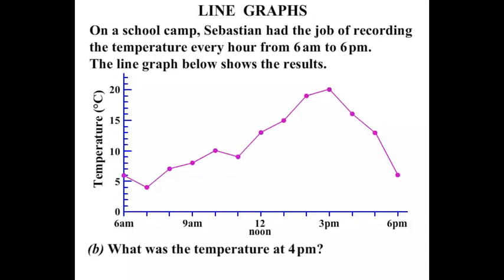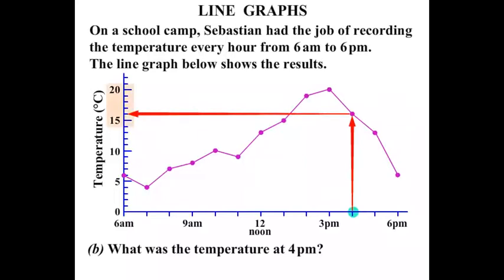What was the temperature at 4pm? There's 3pm, there's 6pm — so 4pm would be right in between. From that position, let's read straight up and then straight across. Looking at the scale carefully, we find 16. So the answer is 16 degrees Celsius.